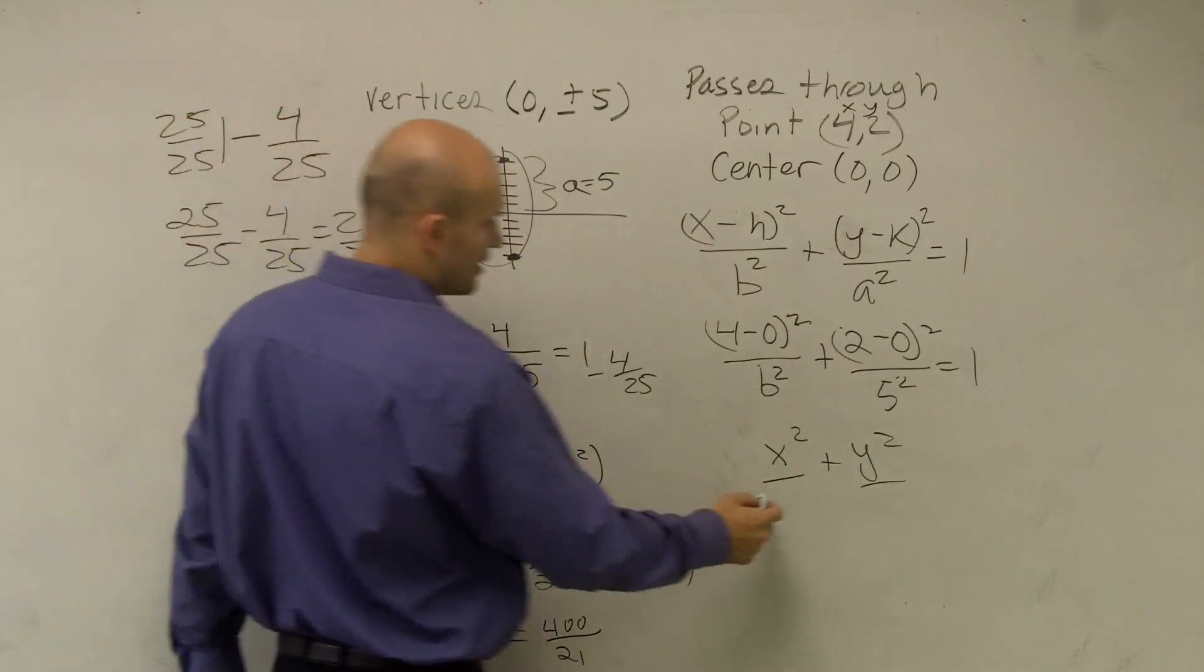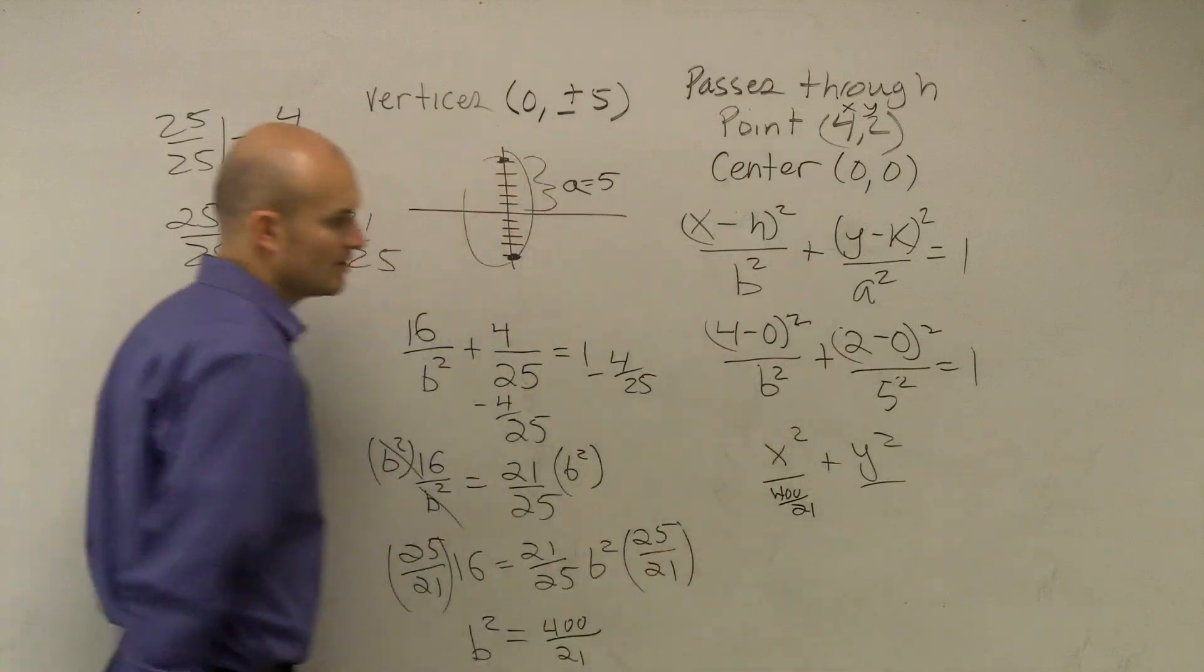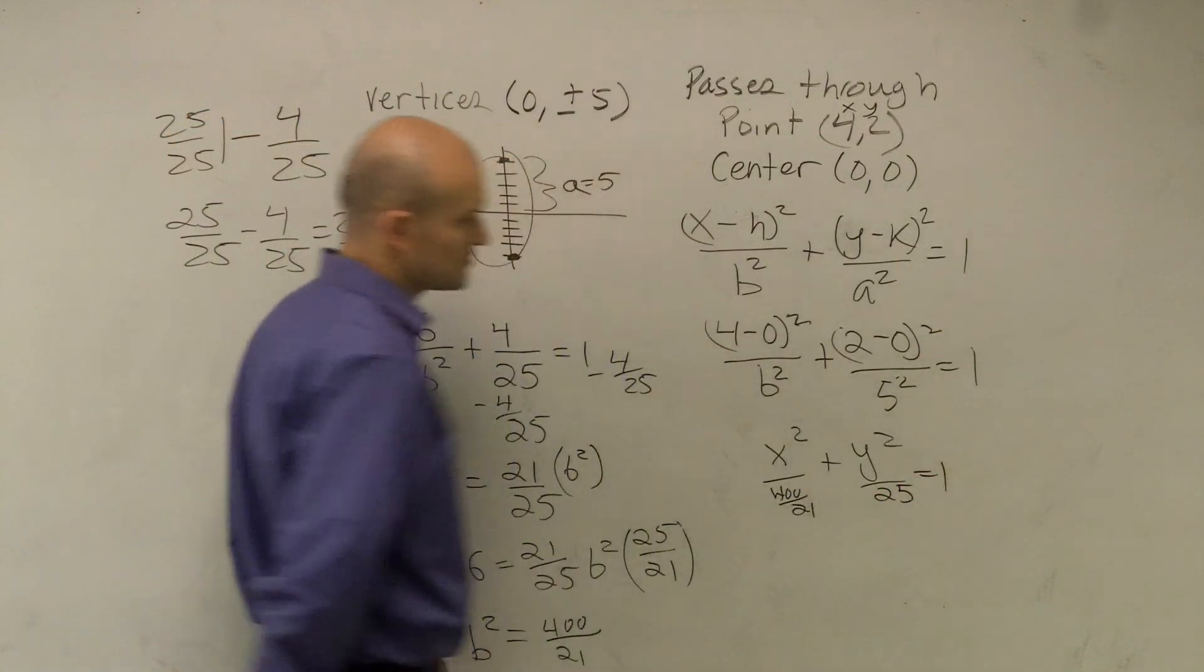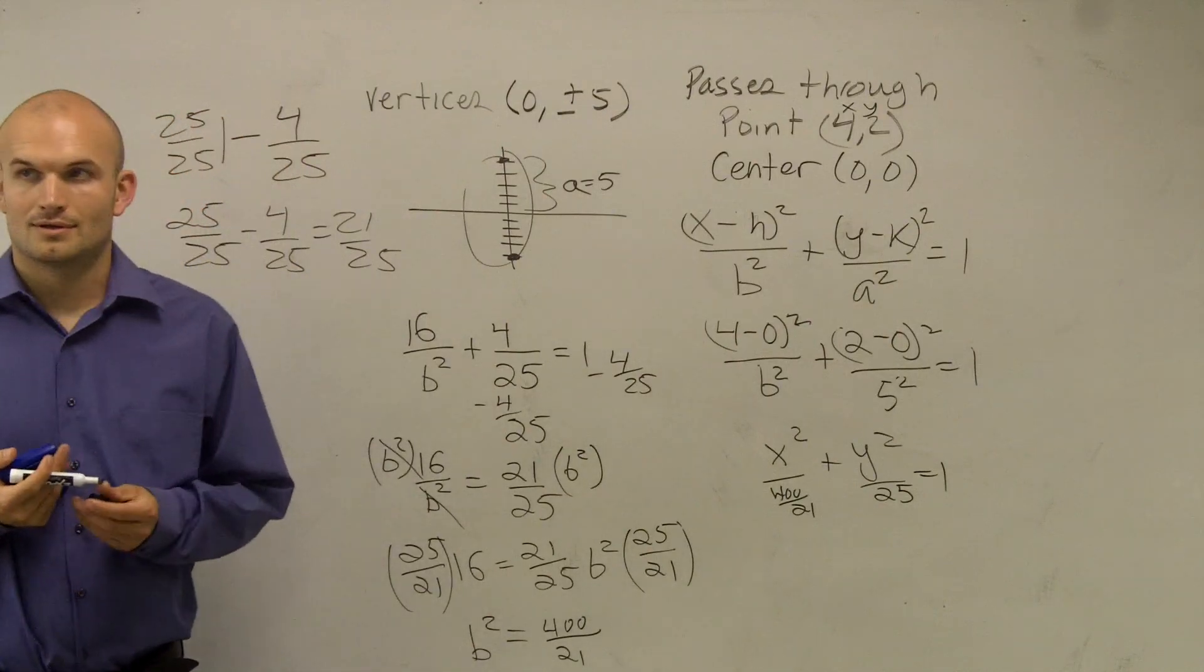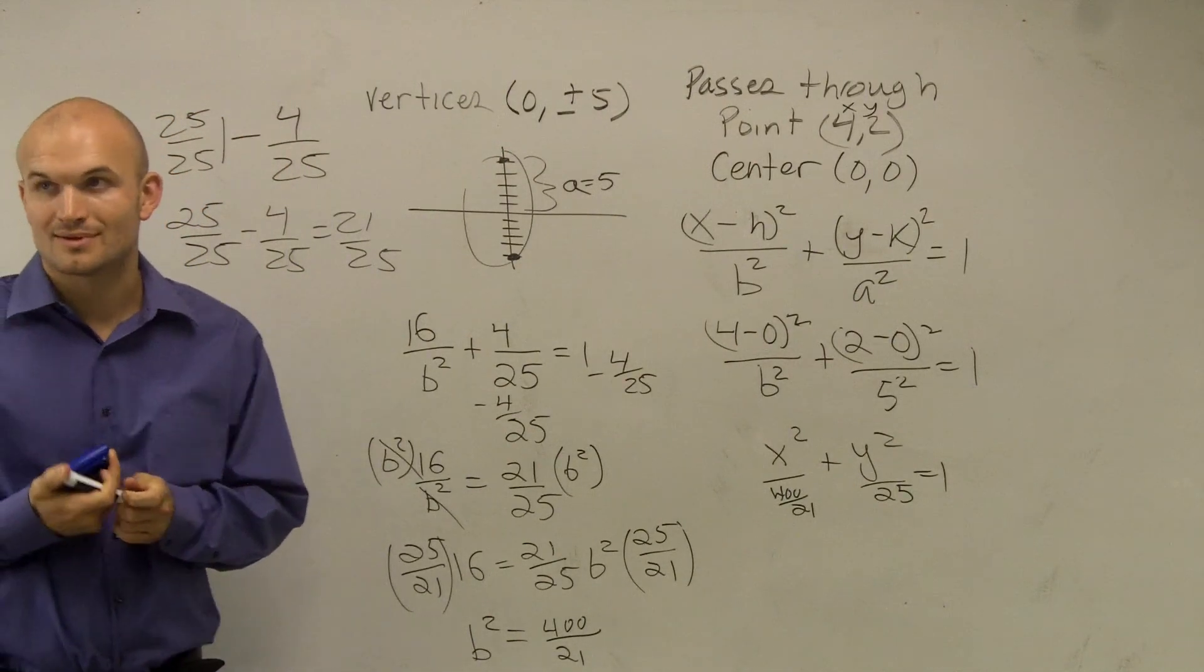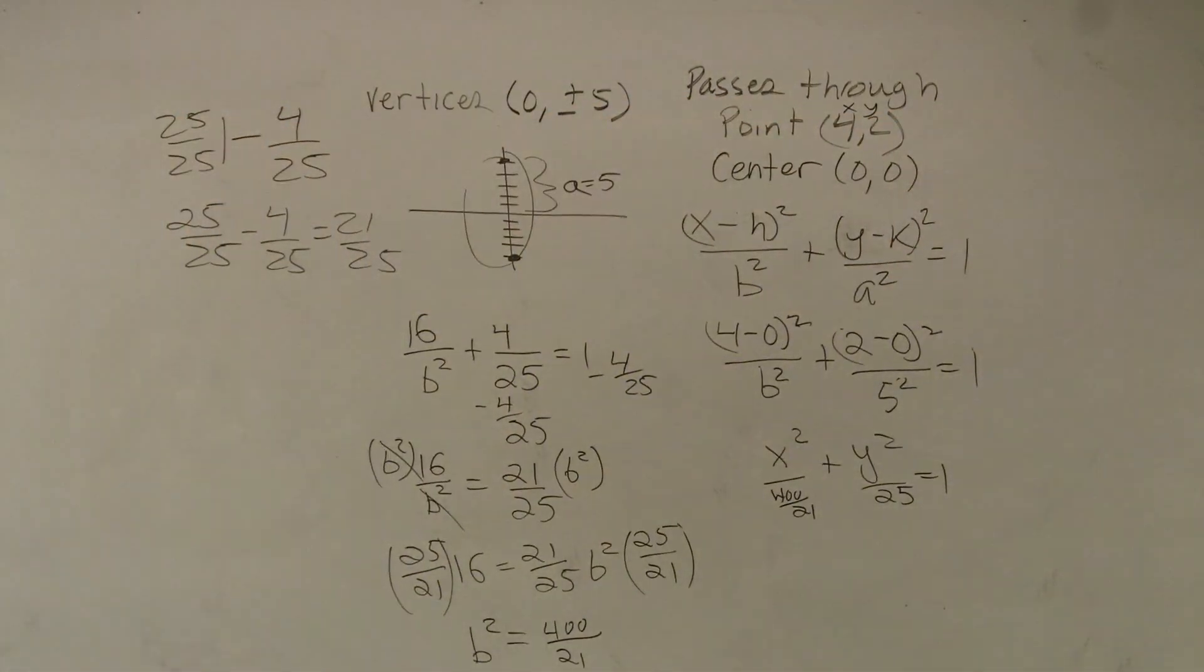I'm just going to have X²/(400/21) + Y²/25 = 1. And that's your answer. Crazy, right? Crazy number, but that's the way it works.